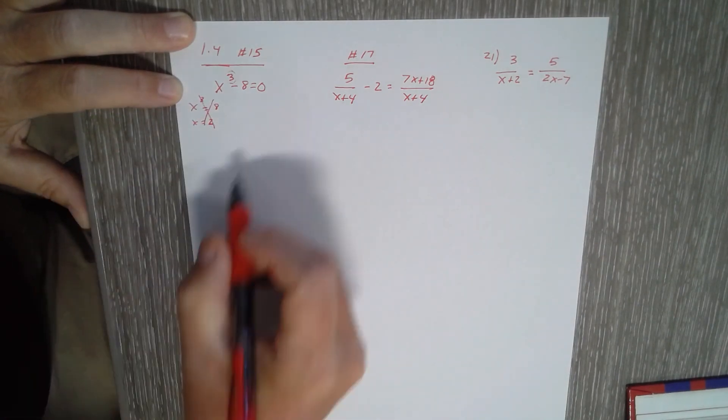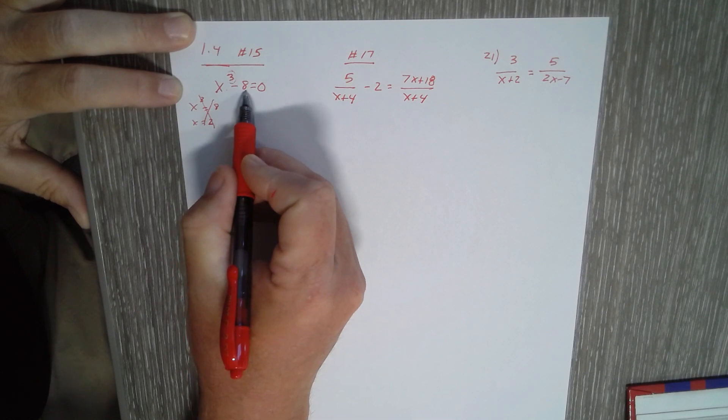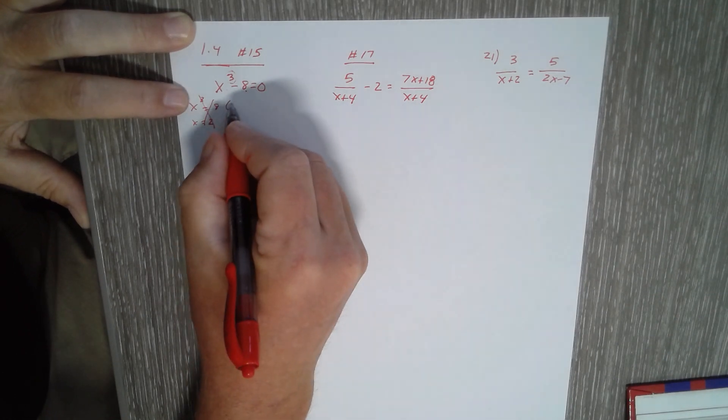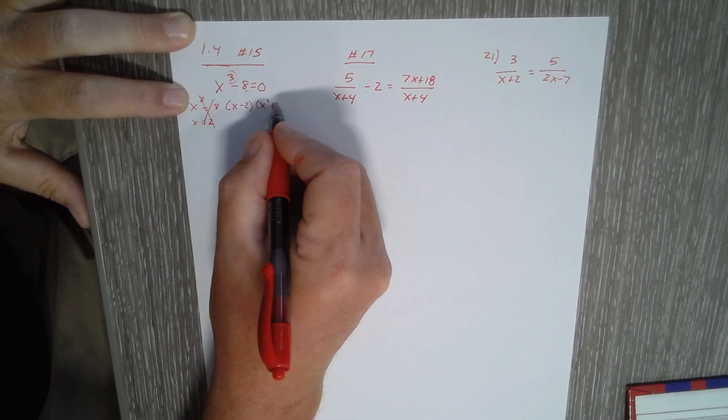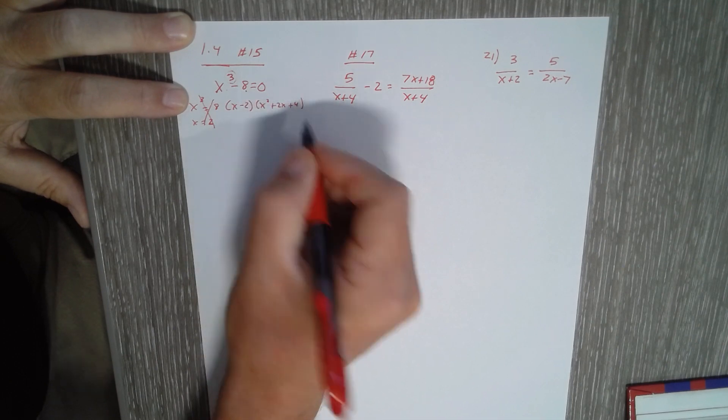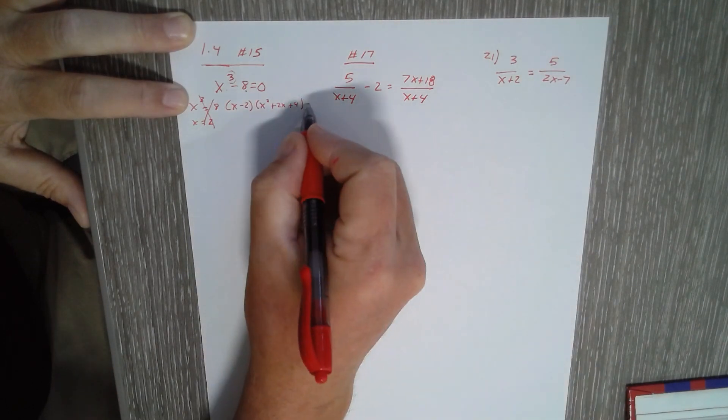In the directions, it tells you to factor. This is a difference of cubes. Difference of cubes factors as x minus 2 times x squared plus 2x plus 4. Okay, if you need to see that, ask in class and I'll show you the difference of cubes formula.